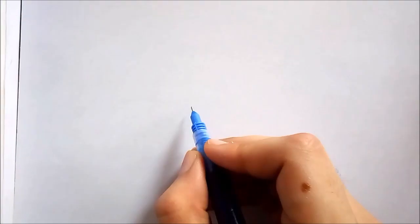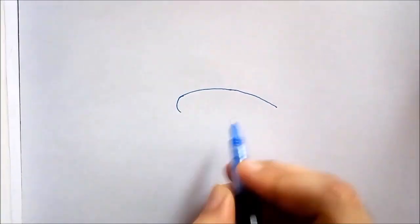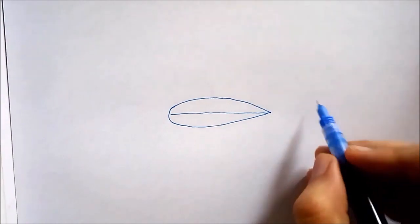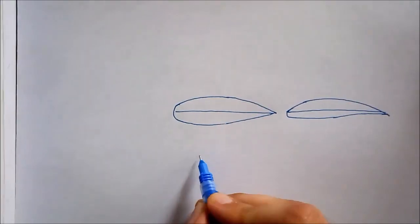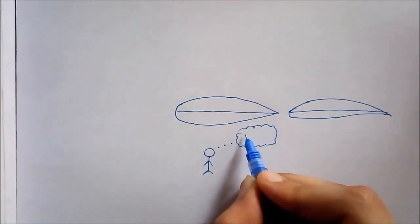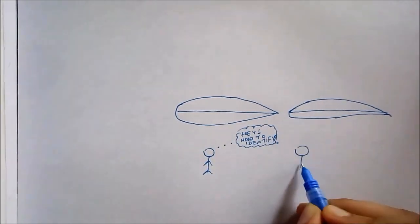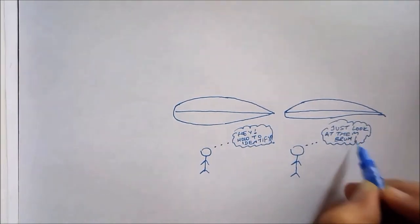Now, how to identify whether the airfoil is symmetric or cambered? I'd say just by looking at it. That's one way. Another way is to read the airfoils name. So these airfoils are named by National Advisory Committee for Aeronautics, NACA and are named as NACA 0012, NACA 2412, NACA 13017 etc.